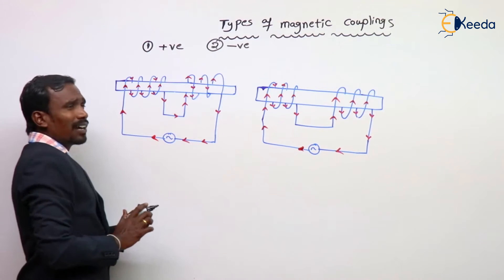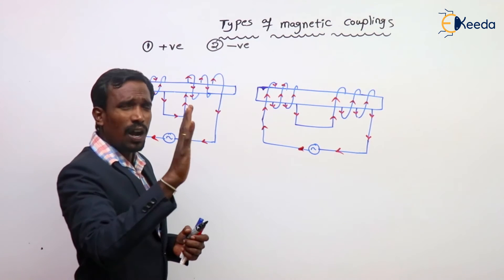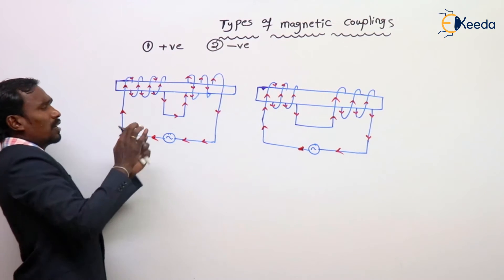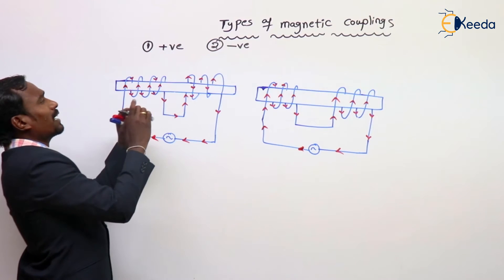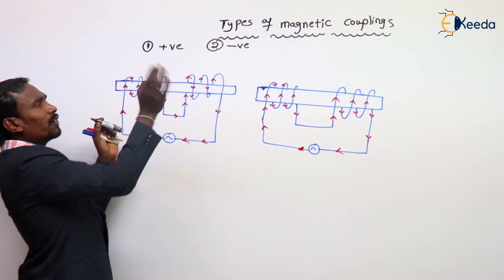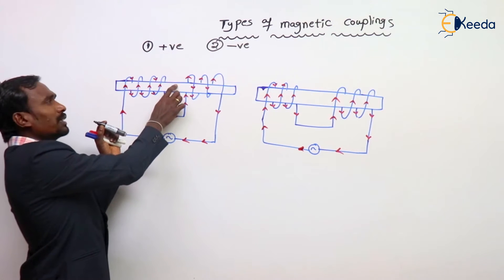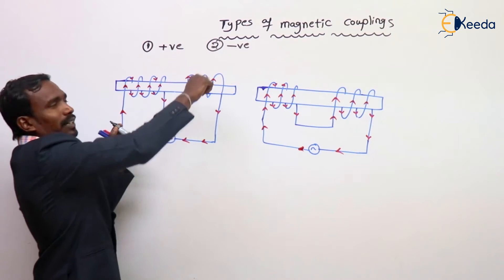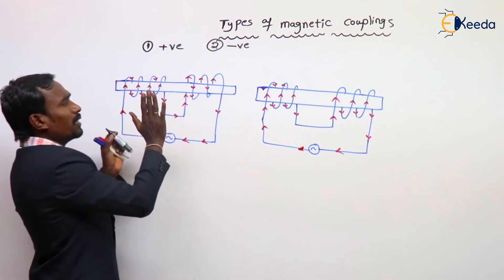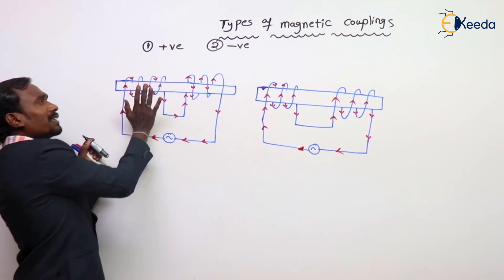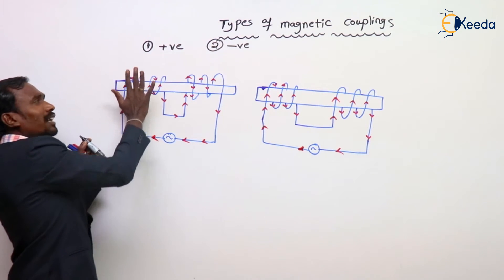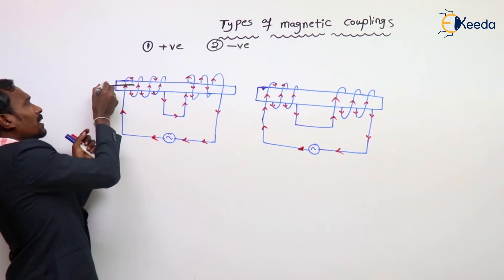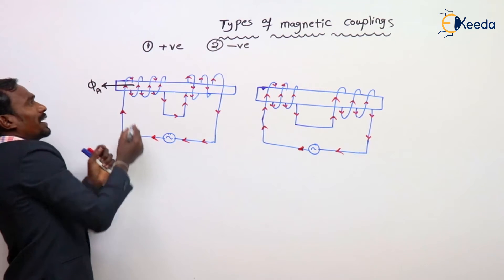According to the right hand thumb rule, see my current direction is upwards. When we are holding like this, my current direction is upwards — out of this iron rod. Here the current direction is upwards, nothing but the current is like this. So the flux direction is like this. This is my flux direction of coil A.